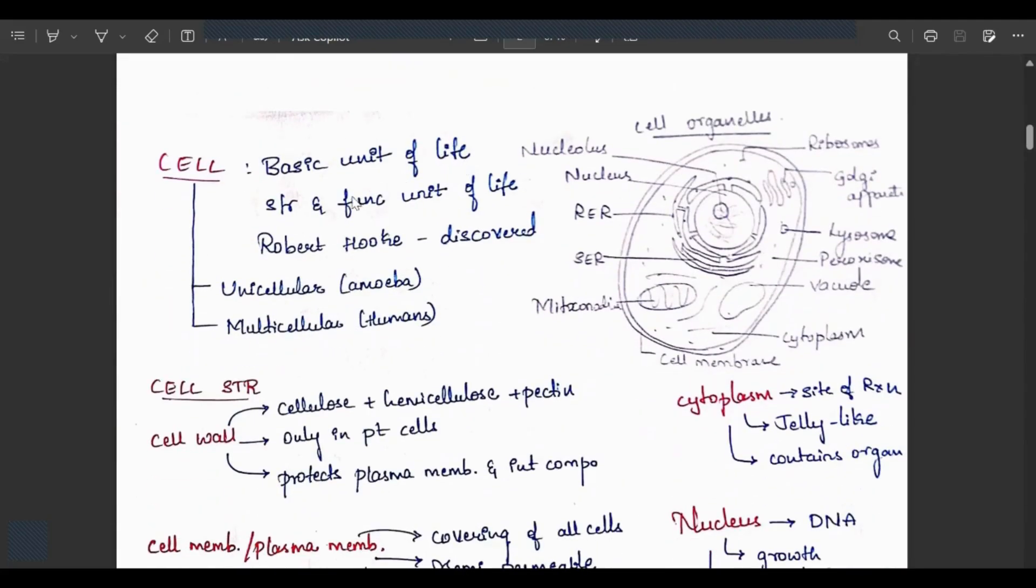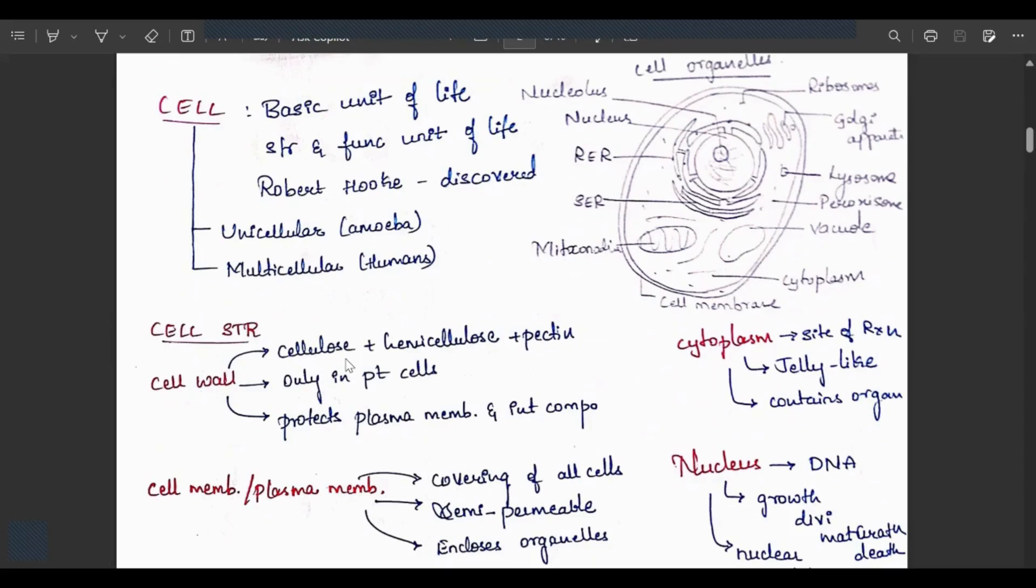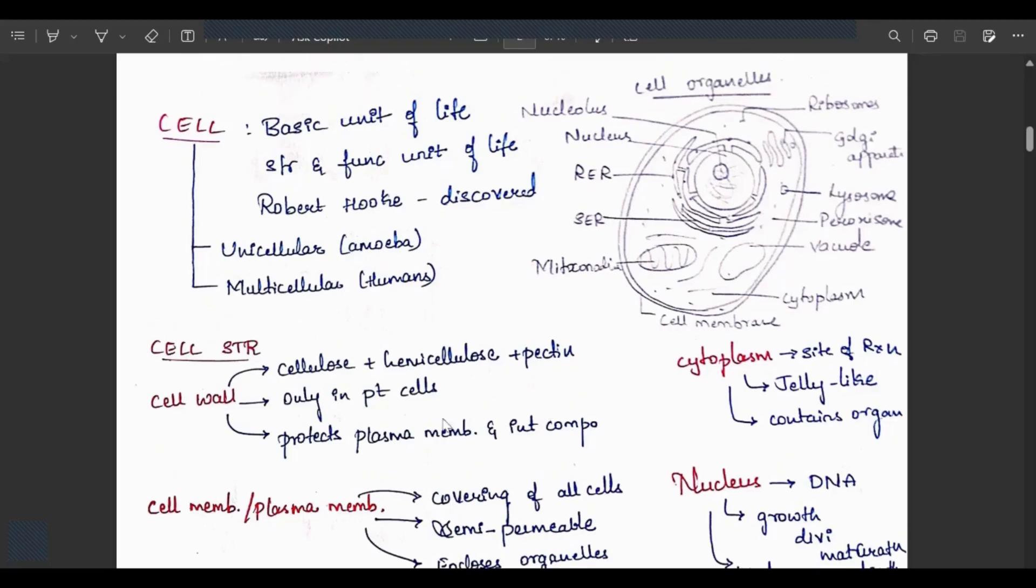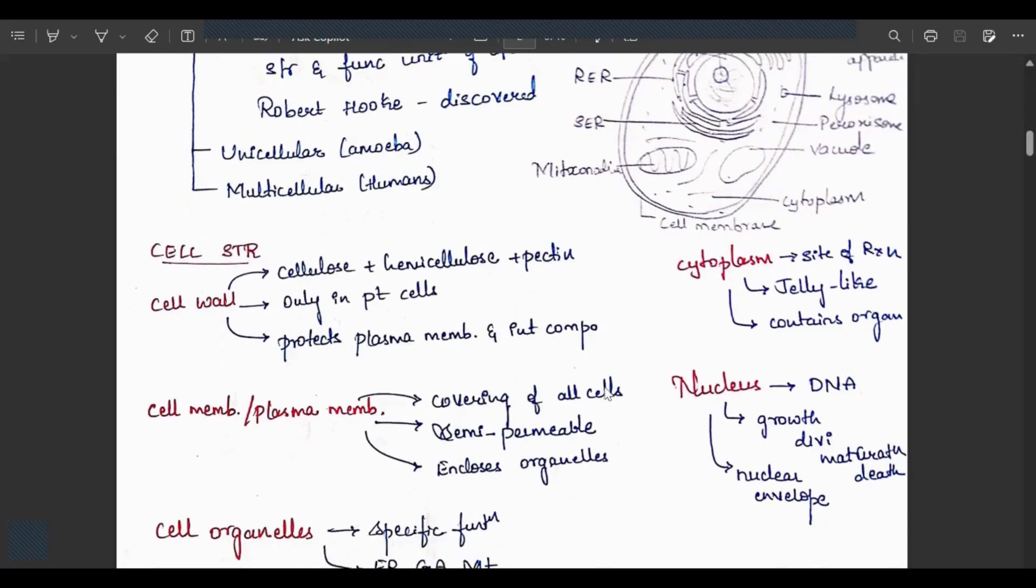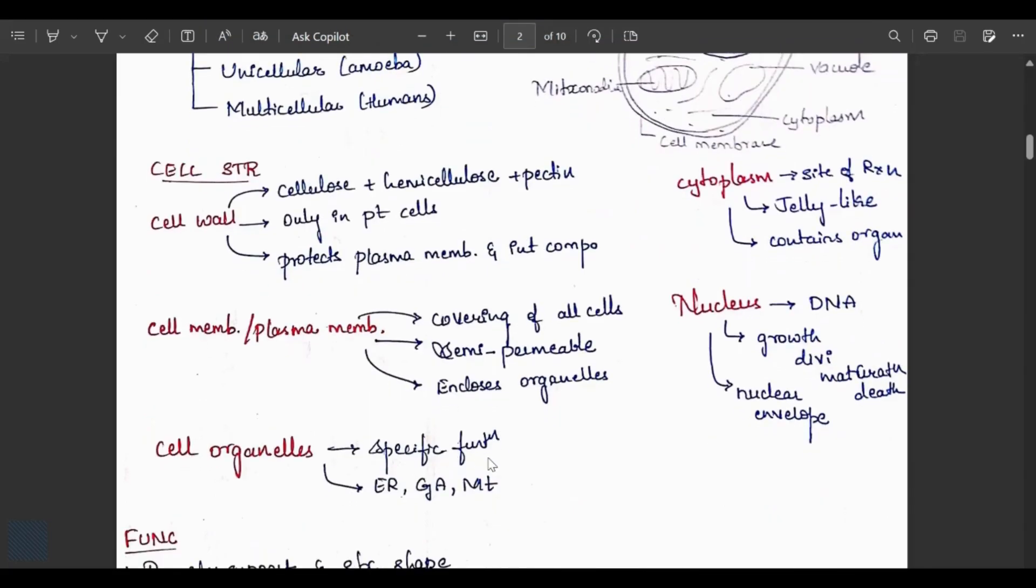Cell is the basic unit of life, the structural and functional unit discovered by Robert Hooke. Cells can be unicellular like amoeba or multicellular like humans. Cell structure: first, the cell wall made up of cellulose plus hemicellulose plus pectin, found only in plant cells, protects the plasma membrane and internal components.